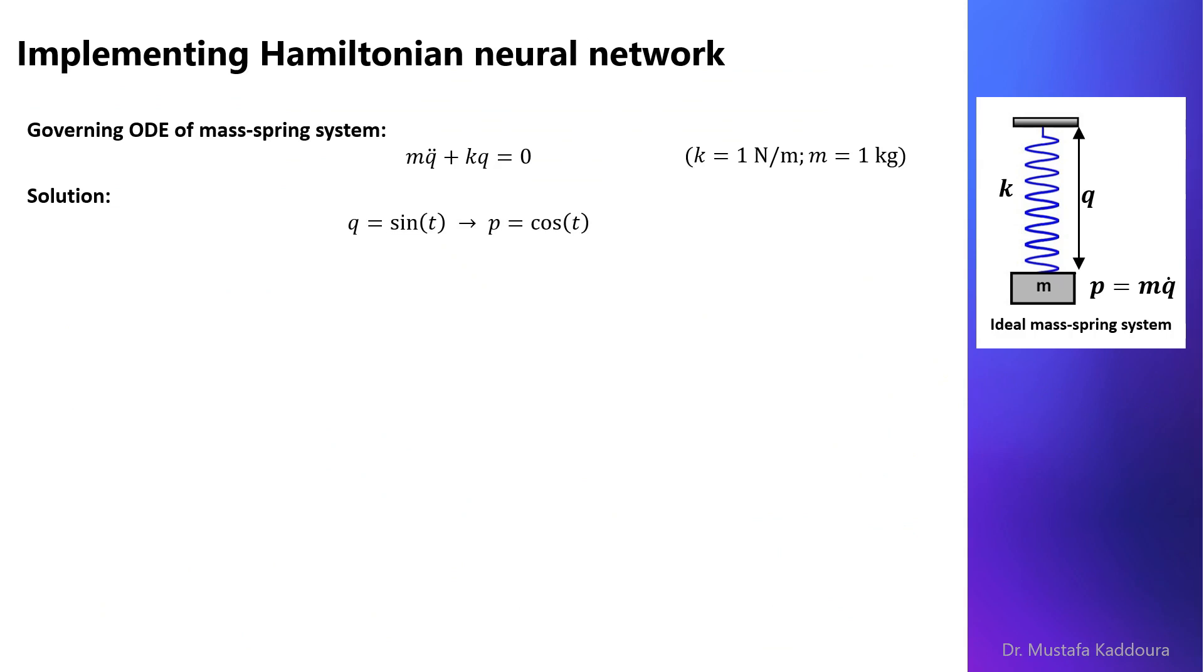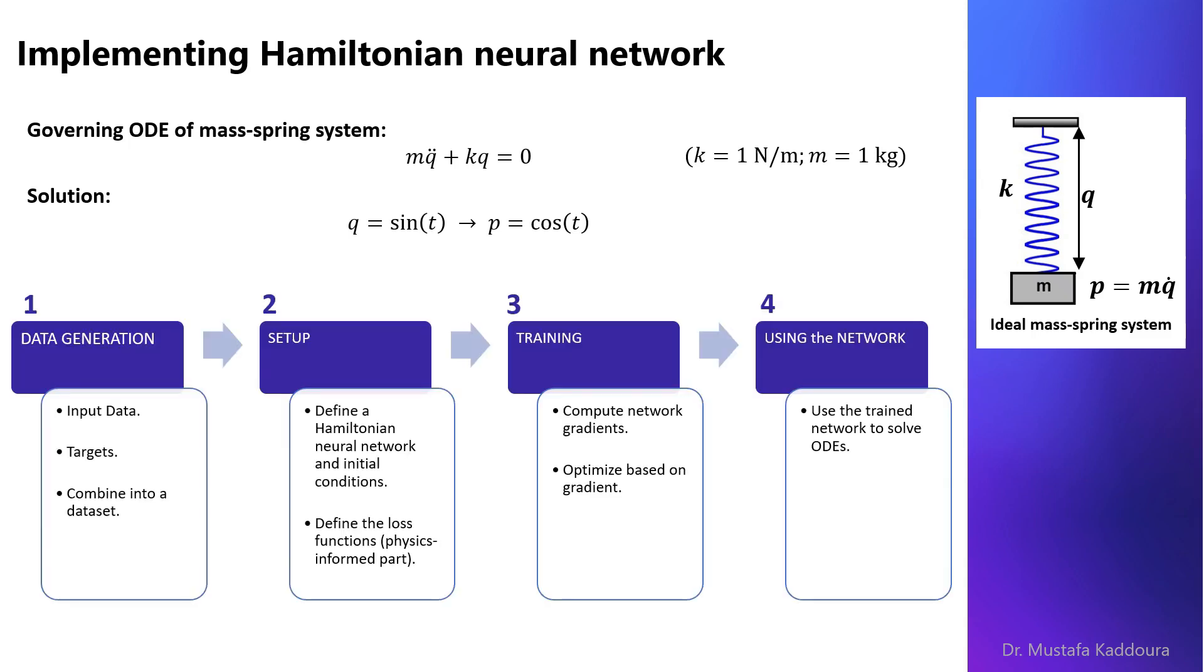We have four steps for implementing the Hamiltonian neural network. First step is data generation, in which we generate input data, targets, and we combine them into a data set.